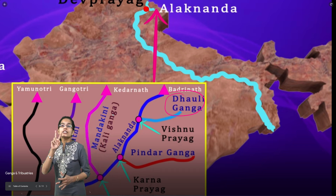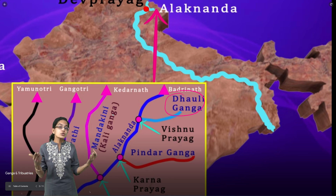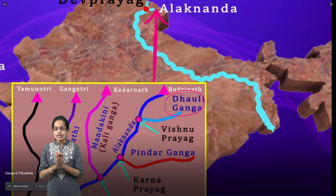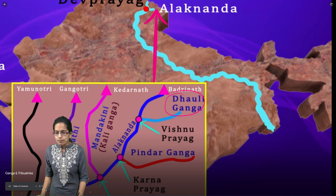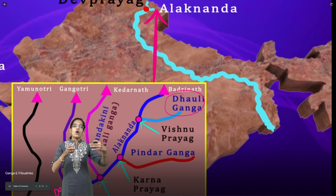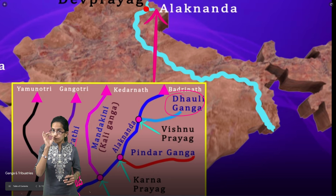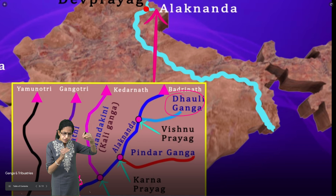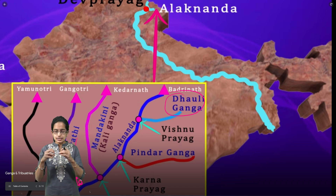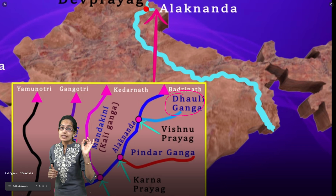The Ganga River is formed by two major river systems: Alaknanda and Bhagirathi. These two rivers meet at a region known as Devaprayag. Wherever two river systems meet in the Ganga river system, we have the suffix 'Prayag.' Before Alaknanda meets Bhagirathi at Devaprayag, there are numerous rivers that join Alaknanda. The origin of Alaknanda is attributed to Badrinath Glacier.